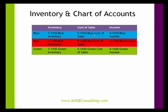Under cost of sales, I would do the same thing. And under income, I would do the same thing. So blue inventory may be 50 different items that fall under the blue category. I track the inventory value against 1-1410, which is an asset account. I track the cost of sales of the blue items against 5-1410, which is a cost of sales account. And I track the income against 4-1410, which is the blue income account.